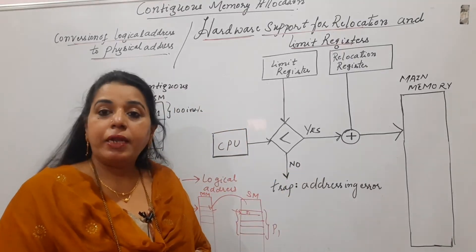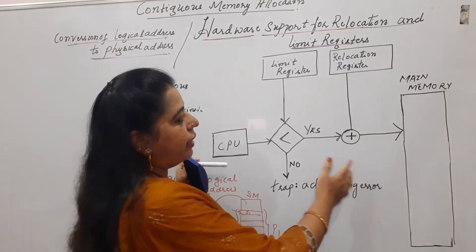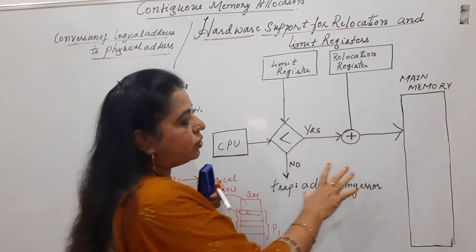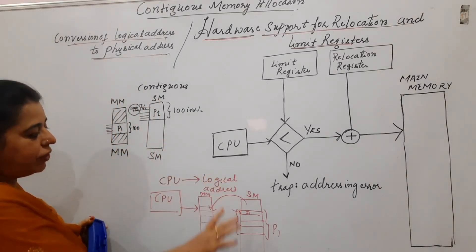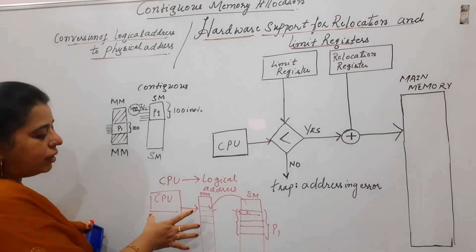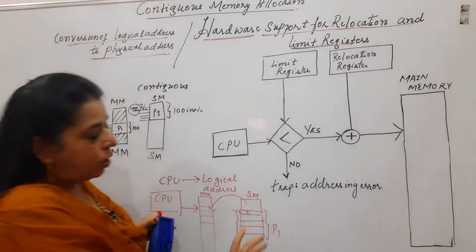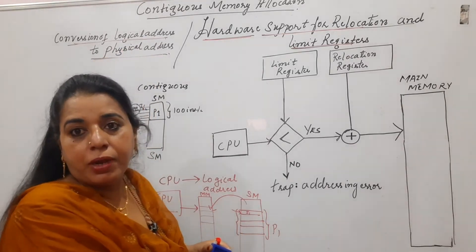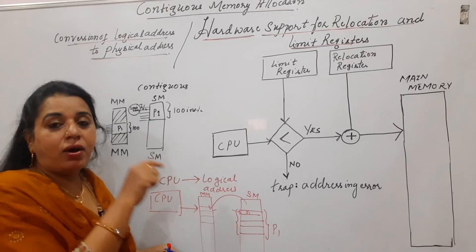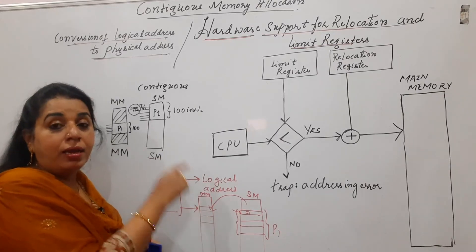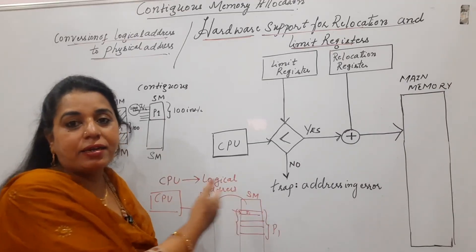This hardware support provides the conversion of logical address to physical address. This is the diagram given in the textbook. The main reason you are learning this is under the heading: conversion of logical address to physical address. Logical address is the address referred to in secondary memory, but CPU always takes instructions from the main memory. So there should be some mechanism which converts the logical address to the physical address.